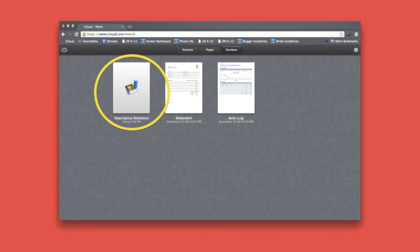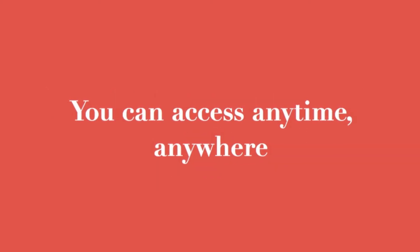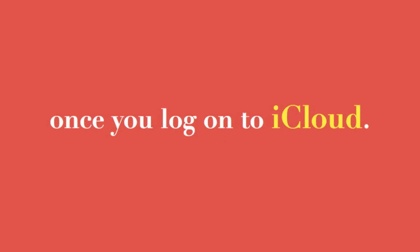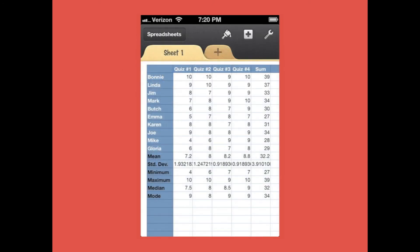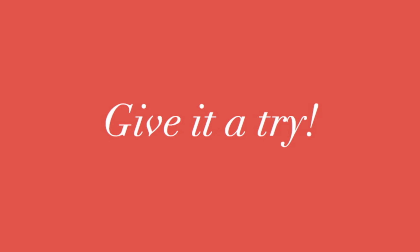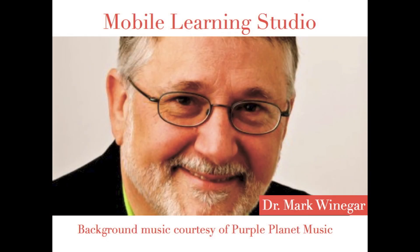And here it is out on iCloud. It's safely maintained by Apple's professional system administrators and you can access it anytime, anywhere once you log in to iCloud. Now I'm running Numbers on my iPhone and you can see that the Descriptive Statistics file is there waiting for me. Click on it and there's our data. So now you're ready — go ahead and give it a try, you'll be surprised how easy and handy it is.